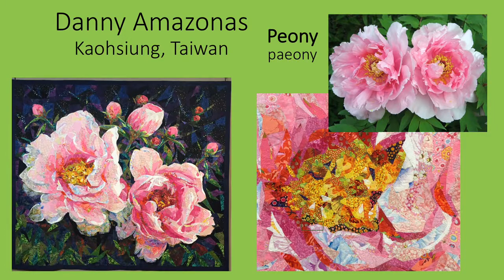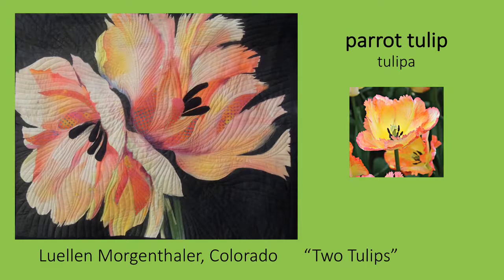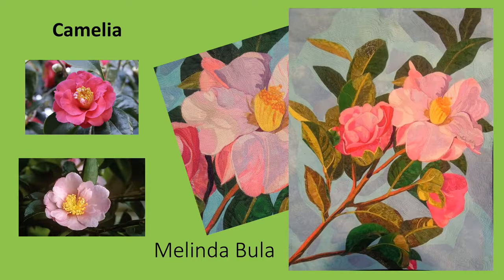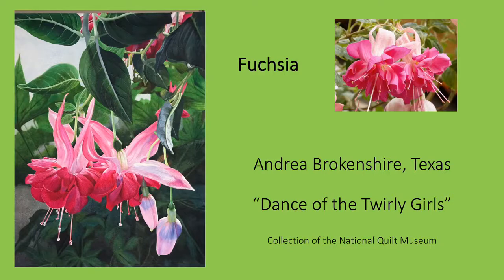Peonies appear in printed fabrics and in quilts. This is a second floral quilt of Danny Amazonas I saw at the National Quilt Museum during his exhibit — I've included a detail to show better the way he uses a multitude of fabric pieces to effectively capture the mass of stamens at the blossom's center. Here's a Parrot Tulip by Llewellyn Morgenthaler. Camellias are the subject of this quilt by Melinda Beulah — the detail shows the way she has used a combination of fabric and stitching to capture the blossom and its dense, brilliant yellow stamens, and the glossy leaves. Fuchsia is captured in this quilt, which was painted and then quilted — it is an amazing piece included in the permanent collection of the National Quilt Museum.